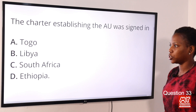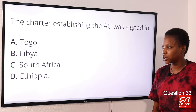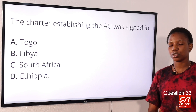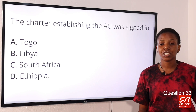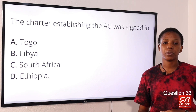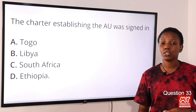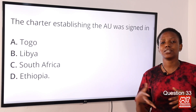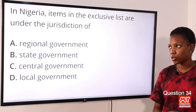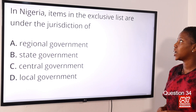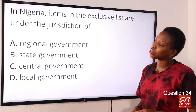Question 33: The charter establishing the AU was signed in — Option A: Togo. Option B: Libya. Option C: South Africa. Option D: Ethiopia. The answer is Option D, Ethiopia. The charter establishing the African Union was held in Addis Ababa, Ethiopia. It was founded on the 26th of May 2001.